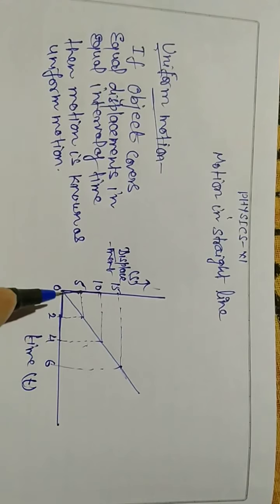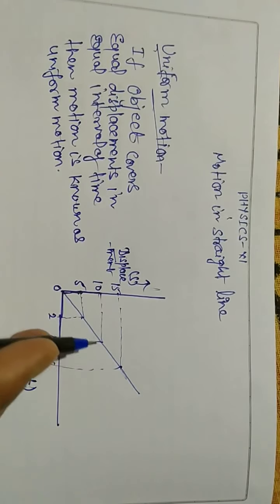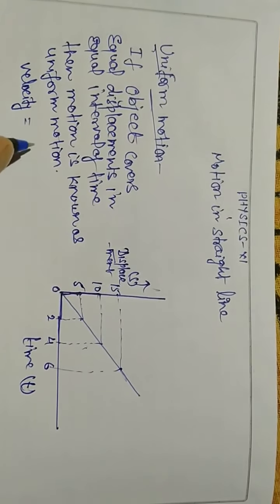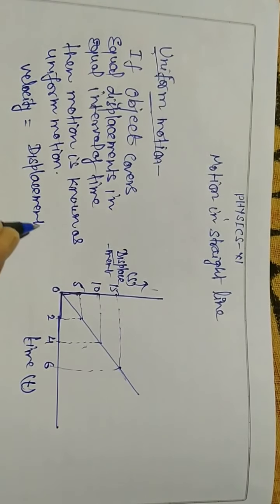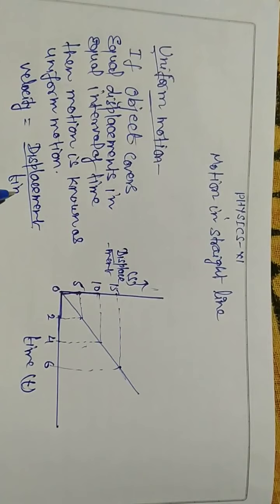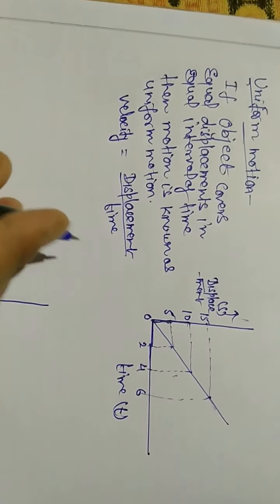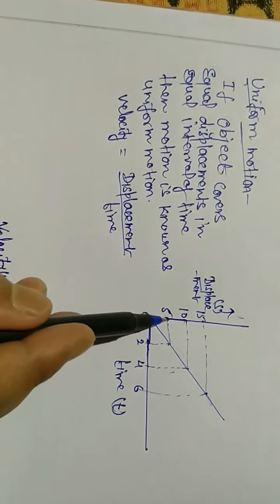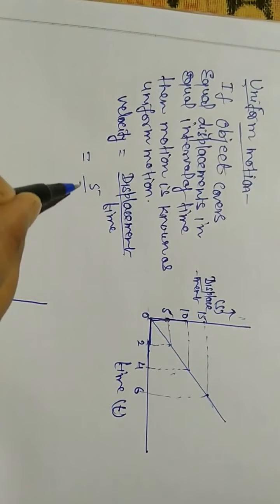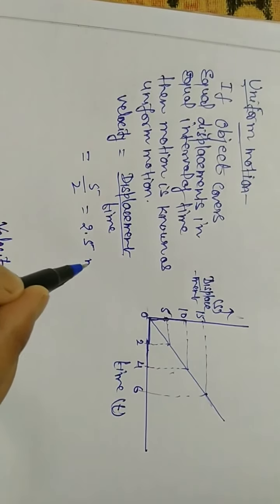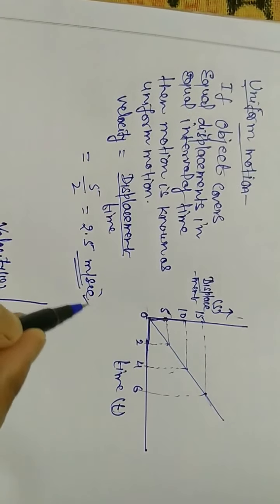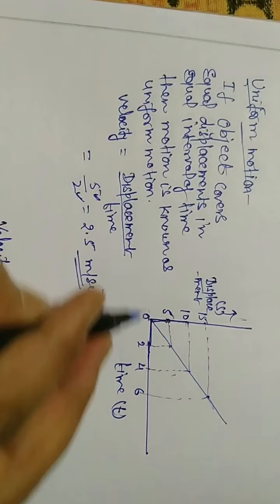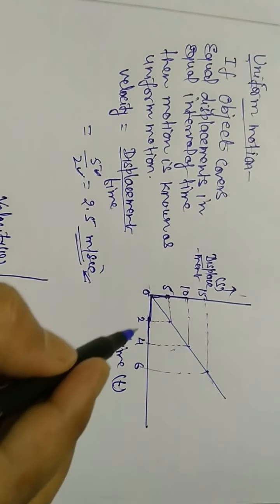Now, how do we find the velocity of a body in uniform motion? We know that velocity is equal to displacement upon time. If the object takes 2 seconds to travel 5 meters, we write 5 divided by 2, which gives 2.5 meters per second — the unit of velocity. So velocity equals displacement upon time.